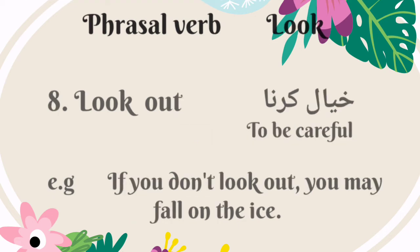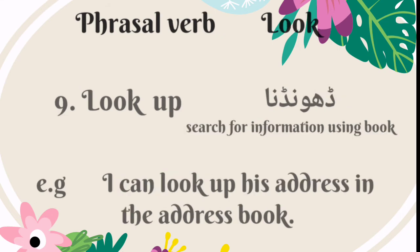The eighth phrasal verb is 'look out.' It means to be careful — Urdu mein is ka matlab hai khayal karna. For example: if you don't look out, you may fall on the ice. The ninth phrasal verb is 'look up.' It means search for information using a book — Urdu mein is ka matlab hai kisi kitab mein dhondna. For example: I can look up his address in the address book.